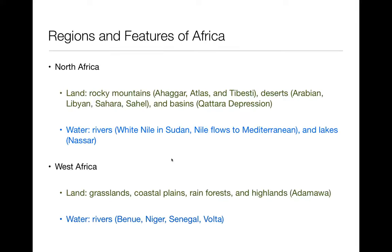You'll see how we use those summaries in class — it'll be a really interesting, fascinating way of exploring what you all believe is important. So here we go. Africa is divided up into four regions. In North Africa, you see a lot of rocky mountains, and here are the names of them. There are a lot of rocky mountains, deserts, and basins.